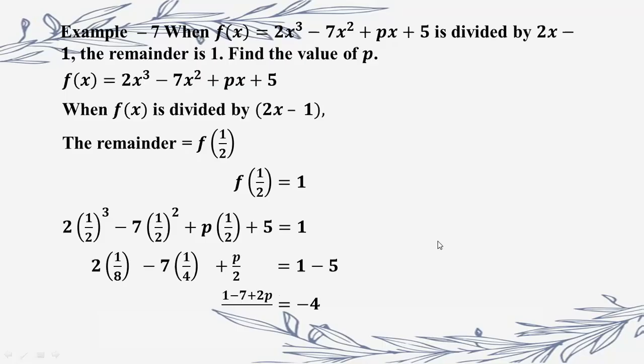Solving: 2p is equal to minus 10, therefore p is equal to minus 5.